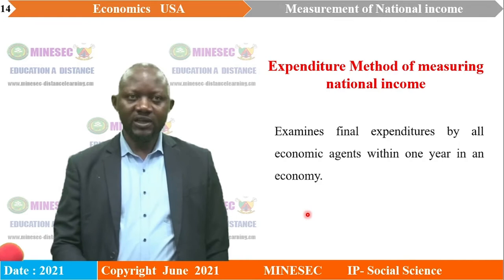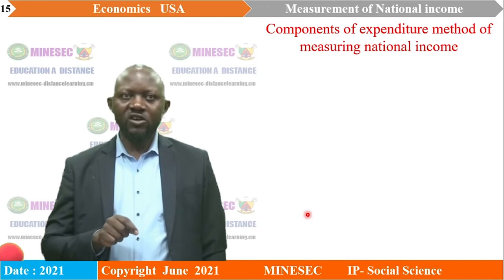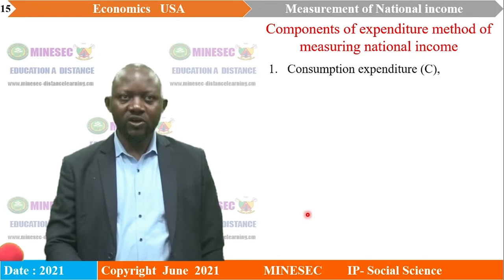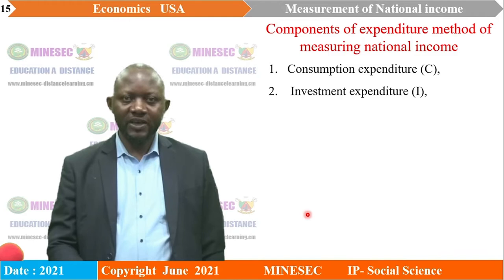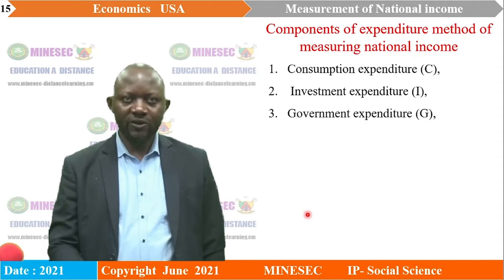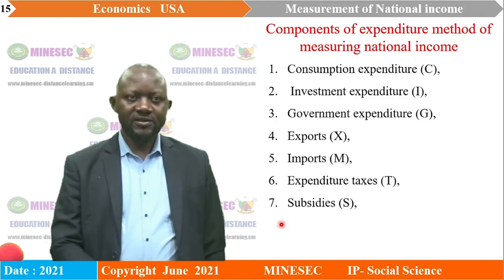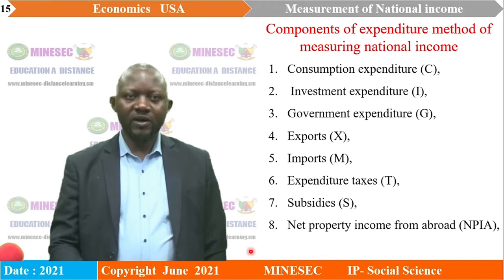We are going to look at nine components of the expenditure method of measuring national income: first, consumption expenditure; second, investment expenditure; third, government expenditure; fourth, exports; fifth, imports; sixth, expenditure taxes; seventh, subsidies; eighth, net property income from abroad; and finally, ninth, depreciation.